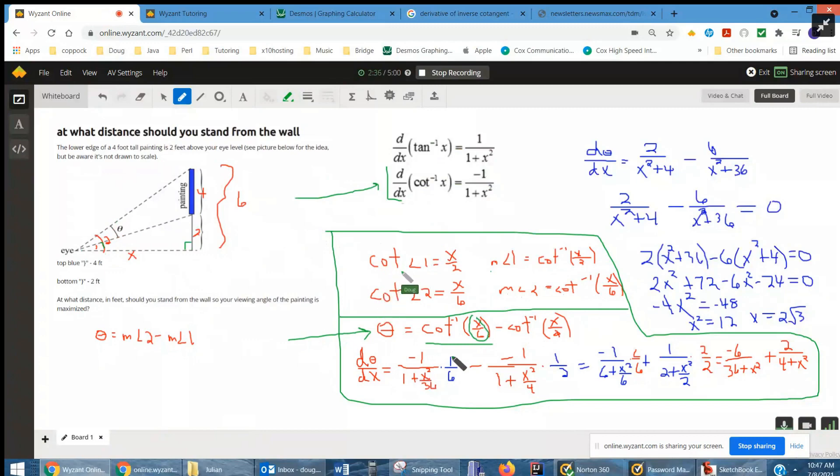Here's where we have to employ the chain rule, times the derivative of the inside, 1 over 6. Similarly, for the derivative of this term, we're going to have minus, minus a minus 1 over 1 plus this thing squared, x squared over 4, times the derivative of the inside.